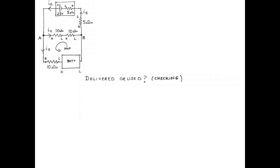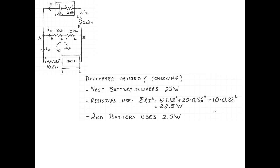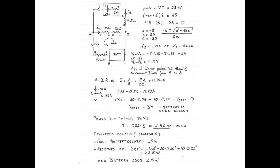If that confused you a bit, here's a quick check. The first battery delivered 25 watts. Then I calculate the power that's being used by the resistors by adding up the resistances multiplied by the current through them squared. So in the top branch I have a 5 ohm resistor through which there's 1.38 amperes. In the middle branch I have a total resistance of 20 ohms through which there's 0.56 amperes. And in the bottom branch I have a 10 ohm resistor through which there is 0.82 amperes. That is 22.5 watts of power being used by the resistors. If the first battery delivers 25 watts and the resistors use 22.5 watts, that means that the second battery has to use 2.5 watts. And this is what the whole solution looks like.